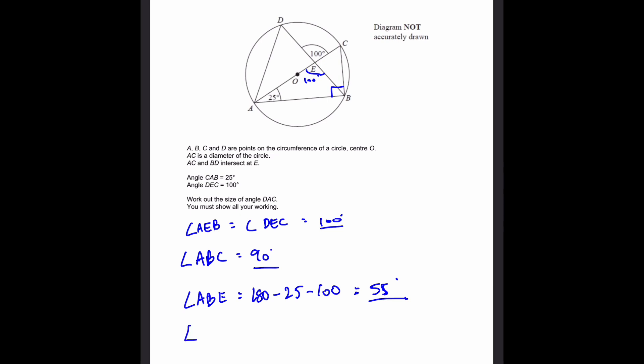And therefore, angle DBC is equal to 90 minus 55, which equals 35 degrees. So we know this is 35.